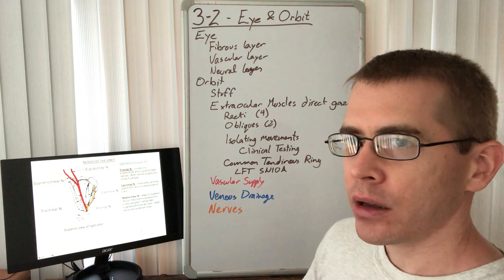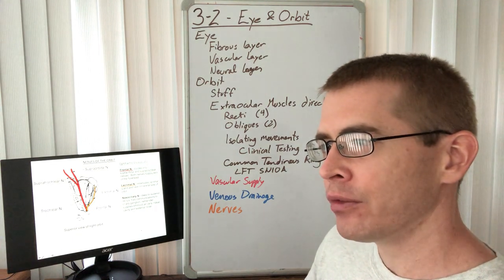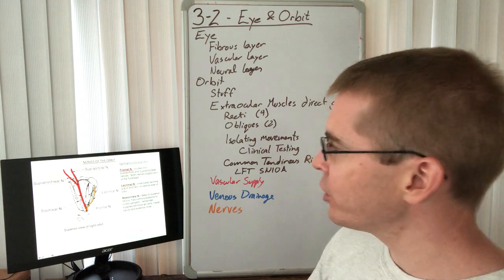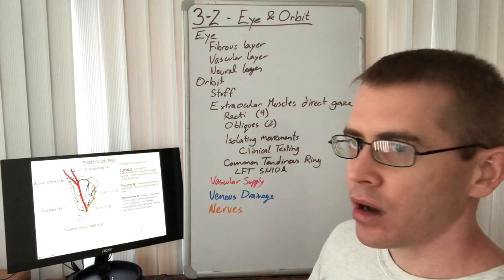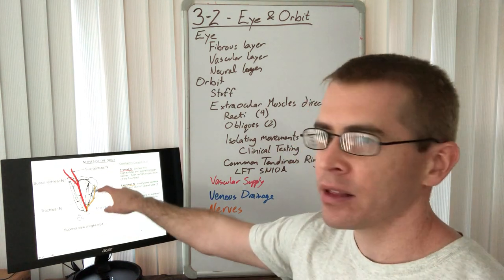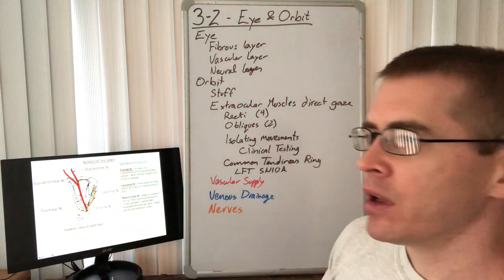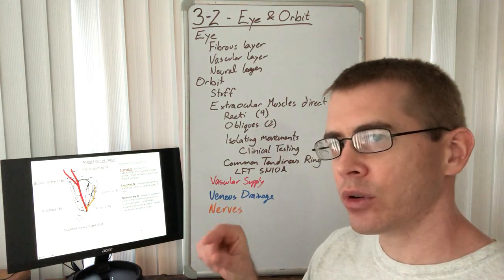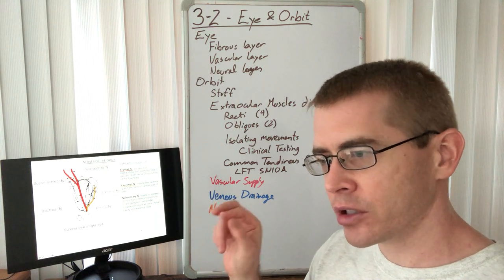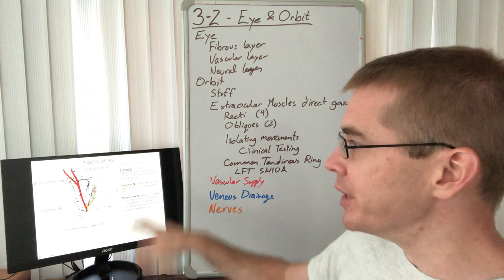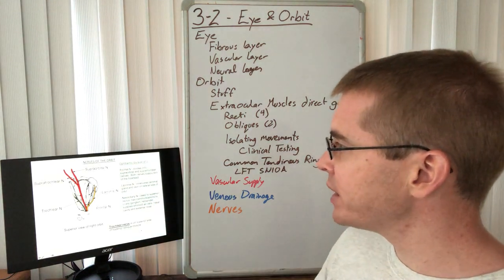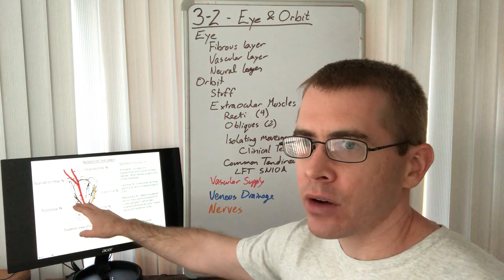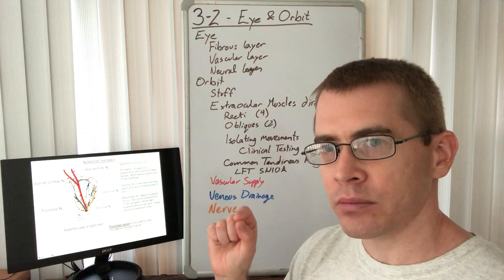Now let's discuss the nerve supply from branches of the trigeminal nerve as well as cranial nerves 3, 4, and 6 within the orbit. The ophthalmic division — V1 branches — includes the lacrimal nerve heading laterally to the lacrimal gland, and the frontal nerve heading superiorly over the levator palpebrae superioris. The frontal nerve branches into the supratrochlear and supraorbital nerves, providing GSA sensation to the forehead.